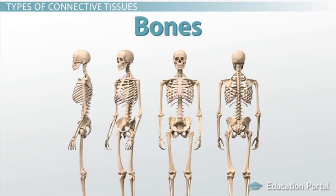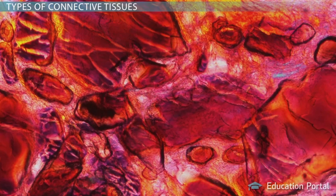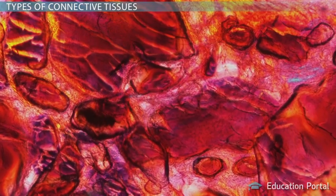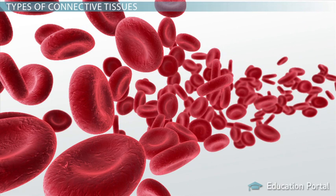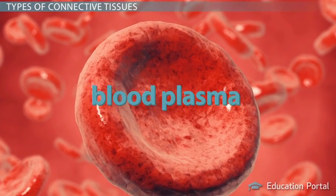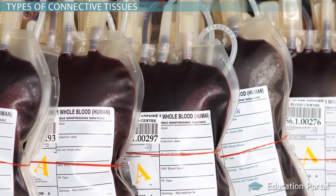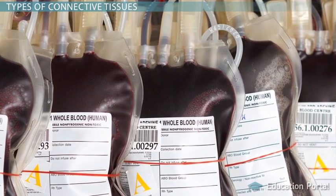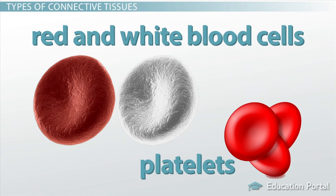Bones are a fourth example of connective tissue. Bones are made up of different types of connective tissue, including bone tissue and marrow. Bone tissue is either spongy or compact, depending on the organization of the cells and matrix. It may come as a surprise that blood is our next example of connective tissue. In this situation, blood plasma serves as the matrix. Plasma is the watery component of blood, and it contains many dissolved substances, such as proteins and nutrients. The cells found within this matrix are red and white blood cells as well as platelets.